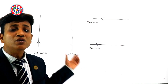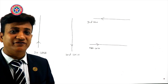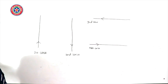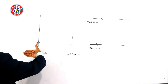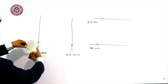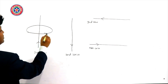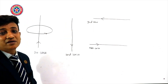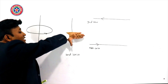Here I have taken four scenarios to help you understand the direction of magnetic field. In the first case, the current is flowing vertically upward. I am keeping my thumb along the direction of current and rotating my fingers — the tips of the fingers point anti-clockwise, so the direction of magnetic field will be anti-clockwise. In the second case, the current is flowing vertically downward, so I am keeping my thumb along the direction of current.